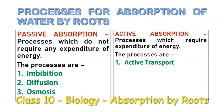Now let us see the different processes involved. We can divide them into two categories: passive absorption, which does not require any expenditure of energy, and active absorption, which requires energy in the form of ATP. In passive absorption we have three processes: imbibition, diffusion, and osmosis. In active absorption, there is active transport.